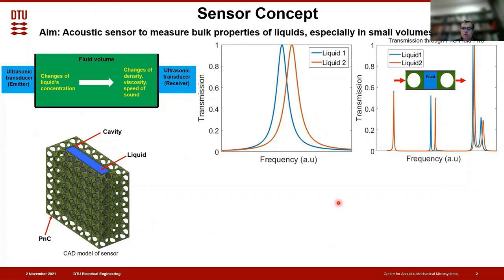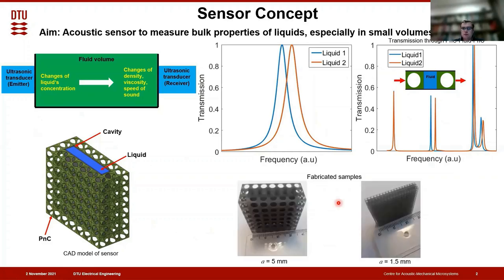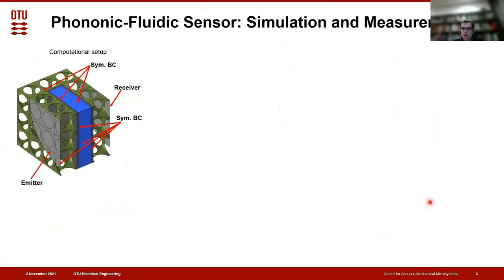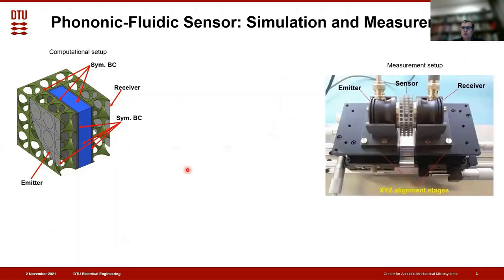In our work we focus on the influence of phononic crystal unit cell size on the sensor performance. For our study, we fabricated two sensors with different phononic crystal unit cell sizes: 5 mm and 1.5 mm. Moreover, we developed a 3D finite element model, taking into account axisymmetry of our sensor to reduce computational time, and we built an experimental setup to conduct our transmission measurements.